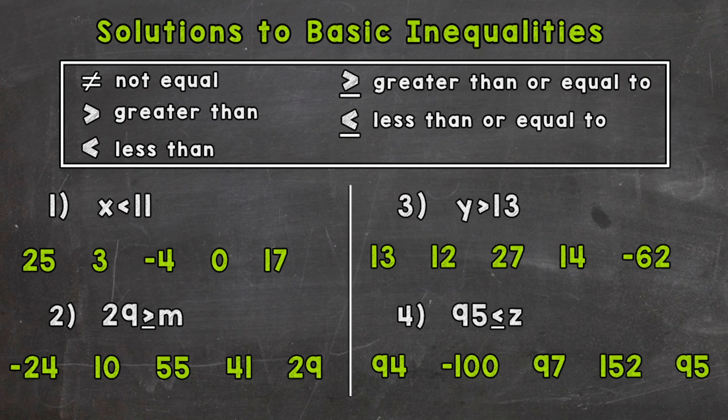So 3 is less than 11. Negative 4 is less than 11. 0 is less than 11. 17 would not work, though. So correct solutions: 3, negative 4, and 0. Now, again, anything less than 11 would work there. So there's an infinite amount of correct solutions.